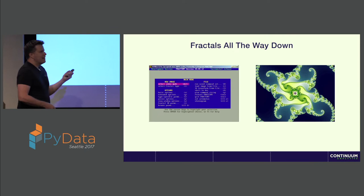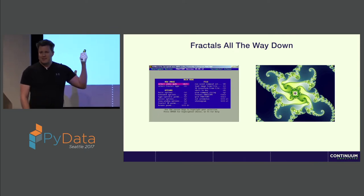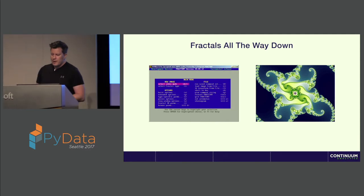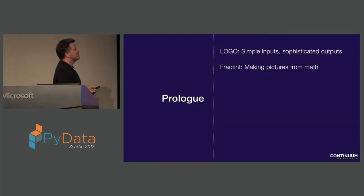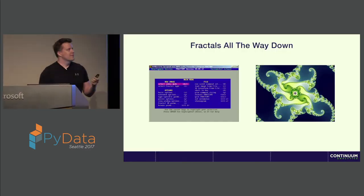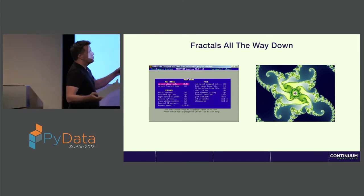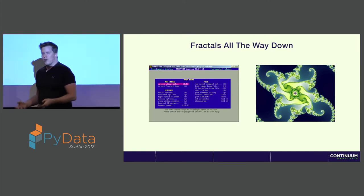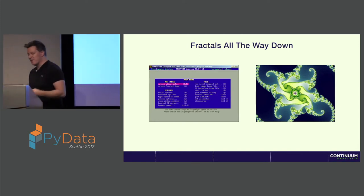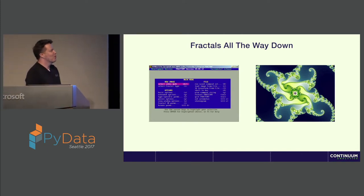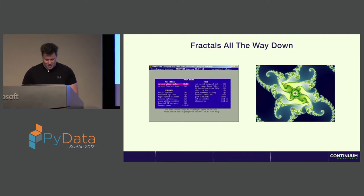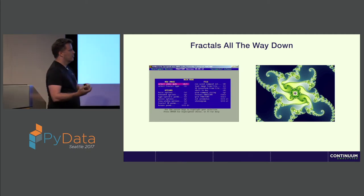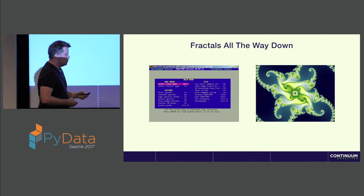The next thing I interacted with was Fractant — a DOS program that let you draw fractals. What I thought was really amazing at the time was that you could connect pictures to math. You could zoom in and out on these images, and it would take progressively longer to draw as you got further in because the precision was more and more. I thought it was really cool that you could connect mathematical ideas directly to images.